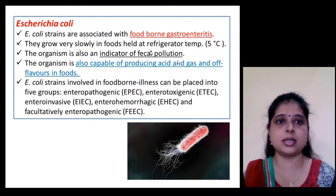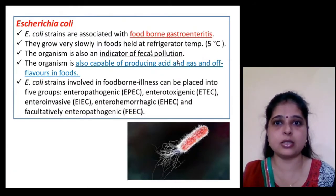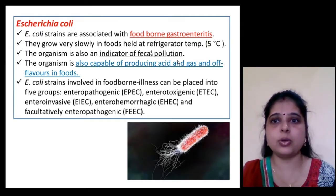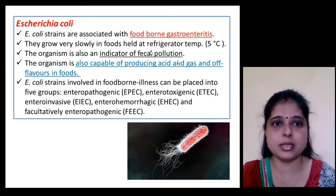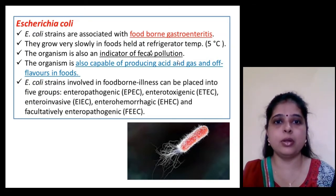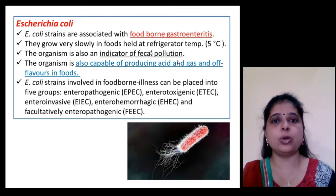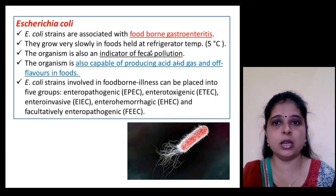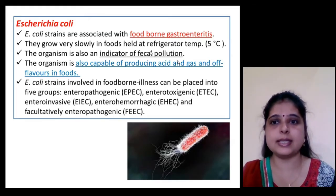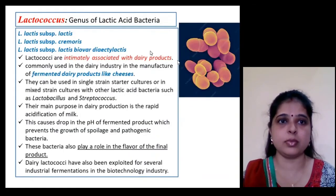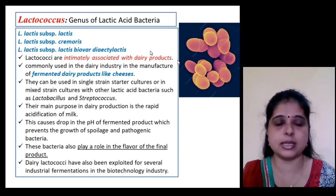Escherichia coli is associated with foodborne gastroenteritis. It grows very slowly in food held at refrigerator temperature (5°C), and E. coli is a good indicator of fecal pollution. It is capable of producing acid and gases and off-flavors in food.